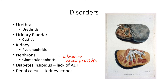Diabetes insipidus is a disorder affecting the kidneys and urine output, caused by a lack of ADH, resulting in increased urine output. Keep in mind, this is not the sugar or insulin problem seen with diabetes mellitus. This form of diabetes simply involves excess urination and excess thirst. Finally, kidney stones — renal calculi — are our last topic.